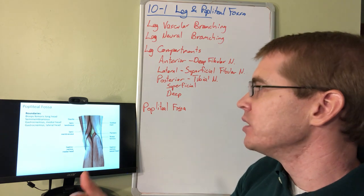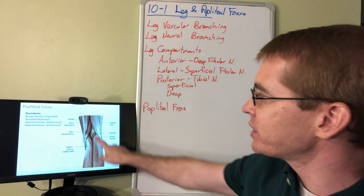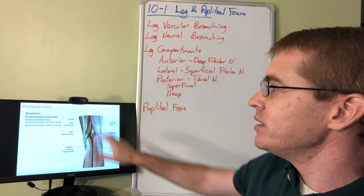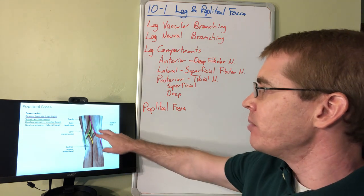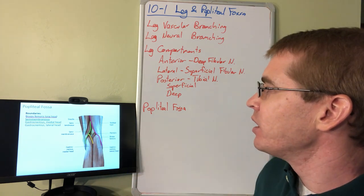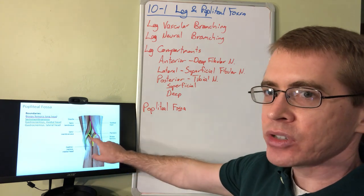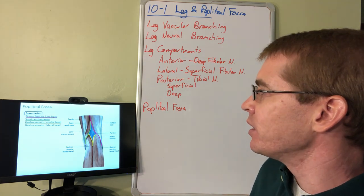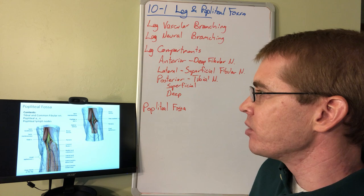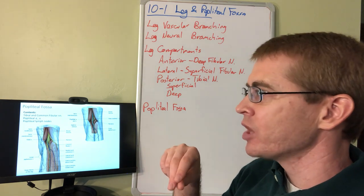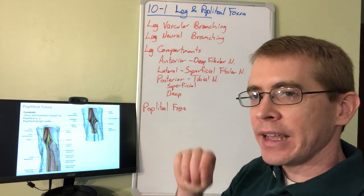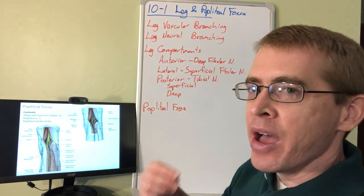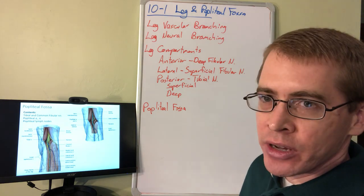The popliteal fossa is a diamond-shaped region with boundaries formed by the biceps femoris, semimembranosus, and the heads of the gastrocnemius. It contains important structures: branches of the sciatic nerve, the popliteal artery and vein, and associated lymph nodes. An infection of the lower leg may travel into these lymph nodes and be palpated there.